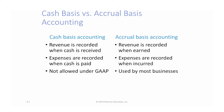Cash basis accounting means companies will record revenues and expenses when they pay for them or when they receive cash for them. So revenue will only be recorded when they get cash for that, and expenses will only be recorded when they pay for it.